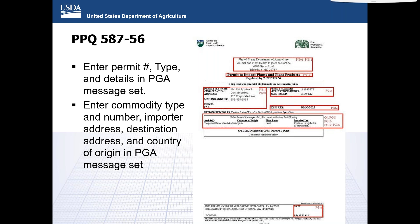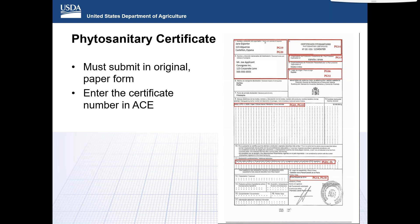Please note that additional permit types may be required if the regulated commodity is considered a live plant test, biological control agent or noxious weeds PPQ 526, or a protected plant PPQ 621. While the phytosanitary certificate itself must continue to be submitted in original paper form, the certificate number must be provided in the message set to ensure the correct certificate is attached to the corresponding message set and PPQ permit in ACE. Please note a phytosanitary certificate is not always required — APHIS regulations will determine if one is needed.